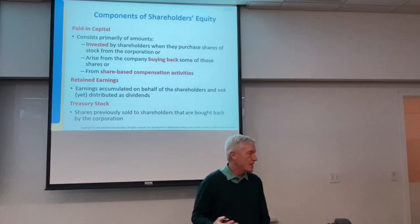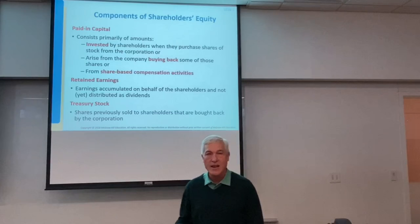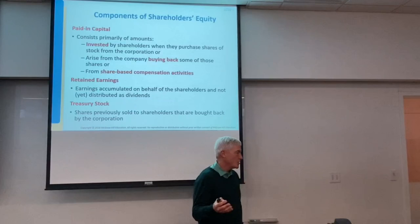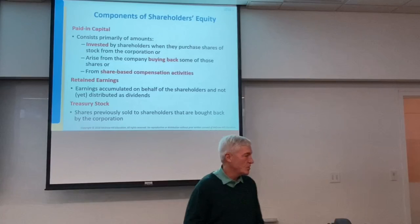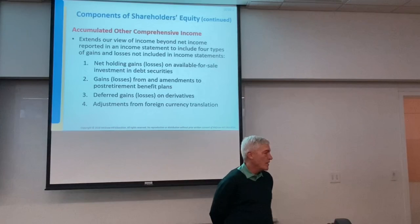Paid-in capital: amounts invested by shareholders; they receive shares of stock and an equity interest in the company. We'll also look at share-based compensation activities in a subsequent chapter. Retained earnings we've talked about. Treasury stock is the repurchase of shares. And here are the four main components of accumulated other comprehensive income: gains and losses on debt securities, gains and losses from amendments to post-retirement benefit plans, gains and losses on derivatives, and foreign currency translation adjustments.